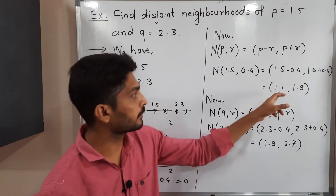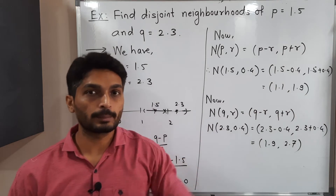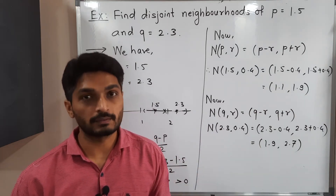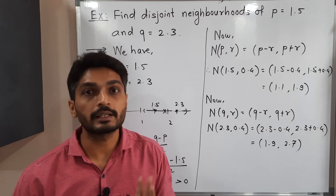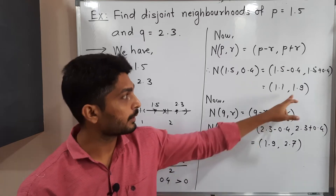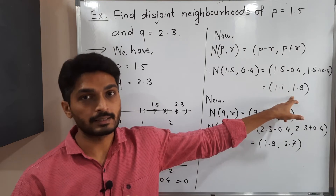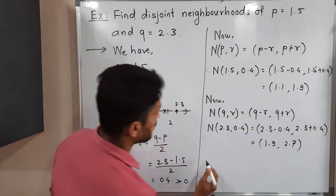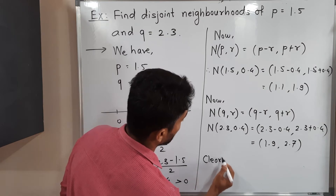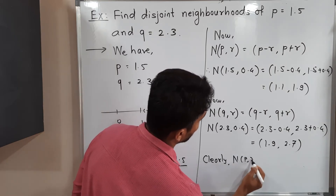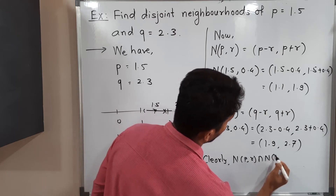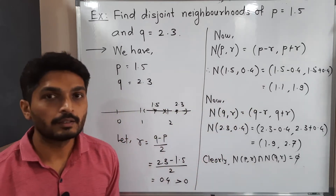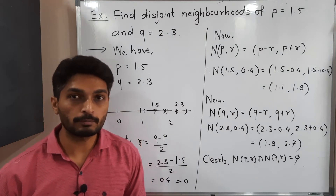The endpoint of the first neighborhood is 1.9 and the starting point of the second is also 1.9. But since these are open intervals, they do not contain their endpoints. So 1.9 neither lies in the first set nor in the second. Therefore the intersection is empty, and N(P,R) ∩ N(Q,R) = ∅. These are the required disjoint neighborhoods of P and Q.